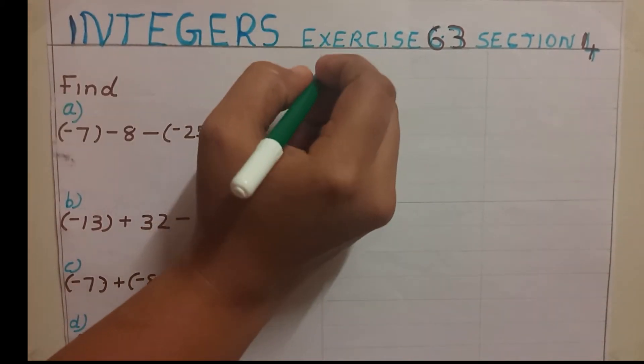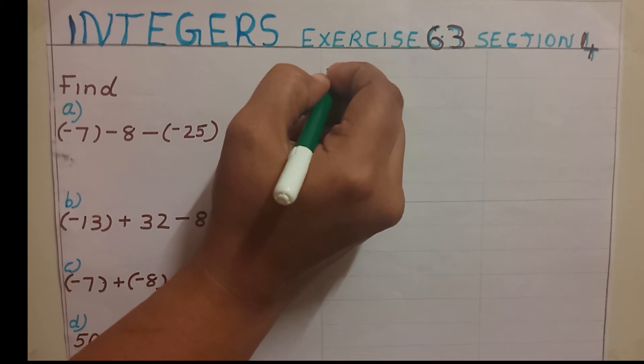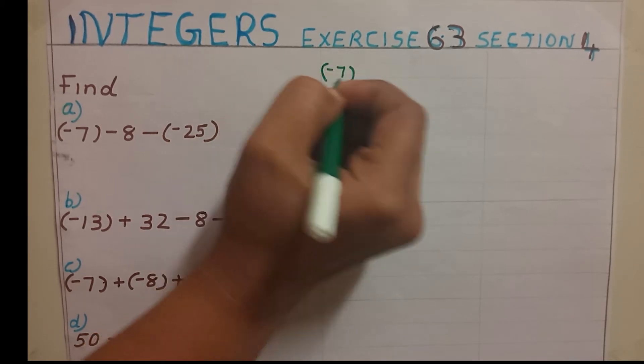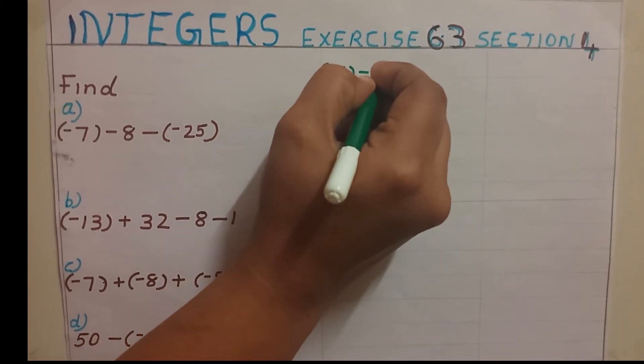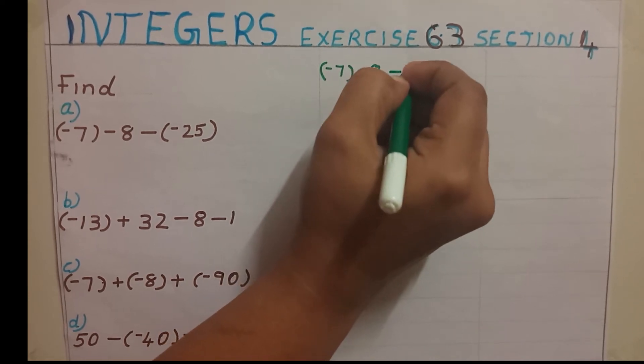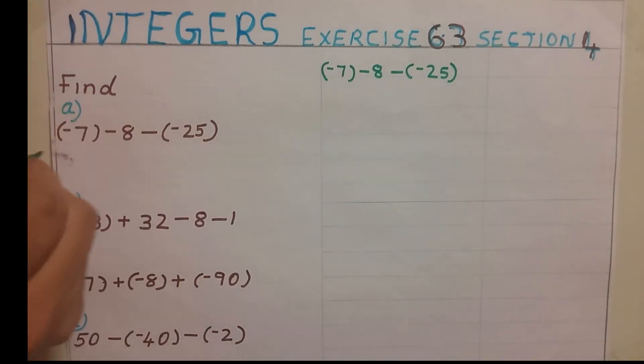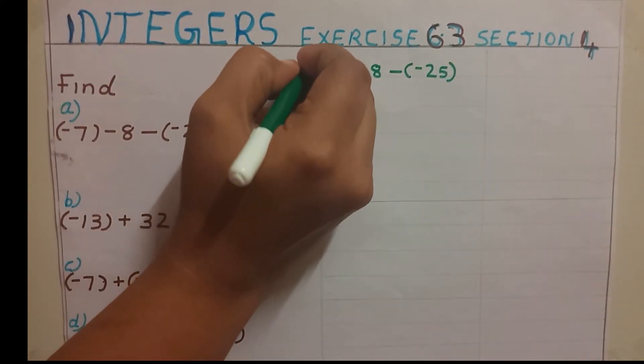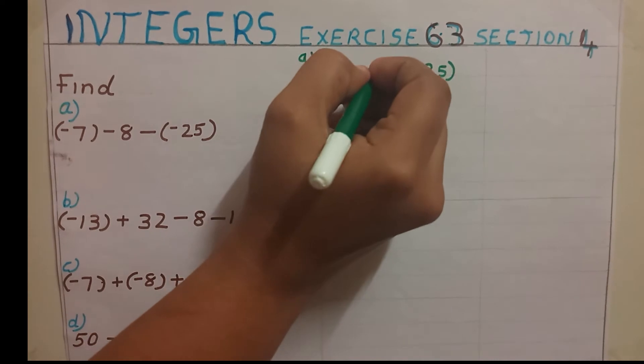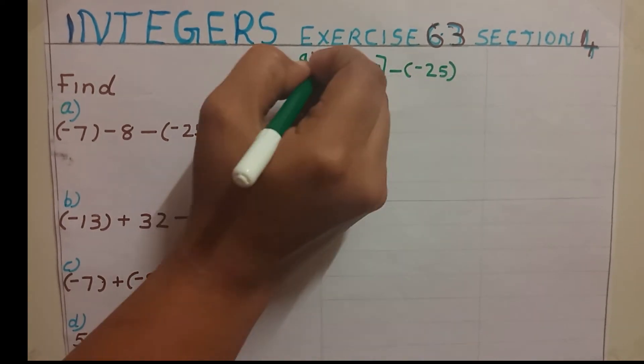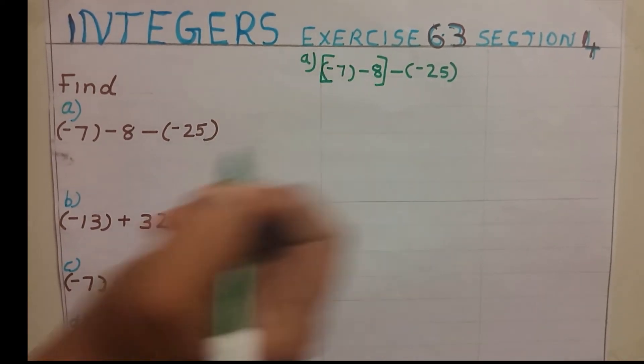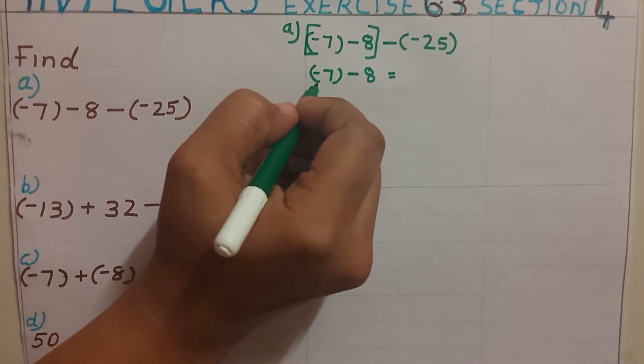Before doing this I'm going to rewrite this question once again: minus 7 minus 8 minus of minus 25. To solve this question, to solve this, first we are going to find out what is the value of this bracket: minus 7 minus 8.